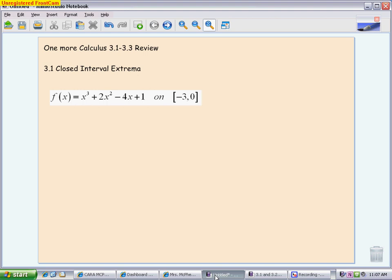First one that you're looking at right here is a closed interval extrema. The directions will just say find any extrema of this particular function on this interval. First thing you need to do is take the derivative, and make sure you take it correctly, because the rest of the problem depends on the ability to take this derivative. We have 3x squared plus 4x minus 4.